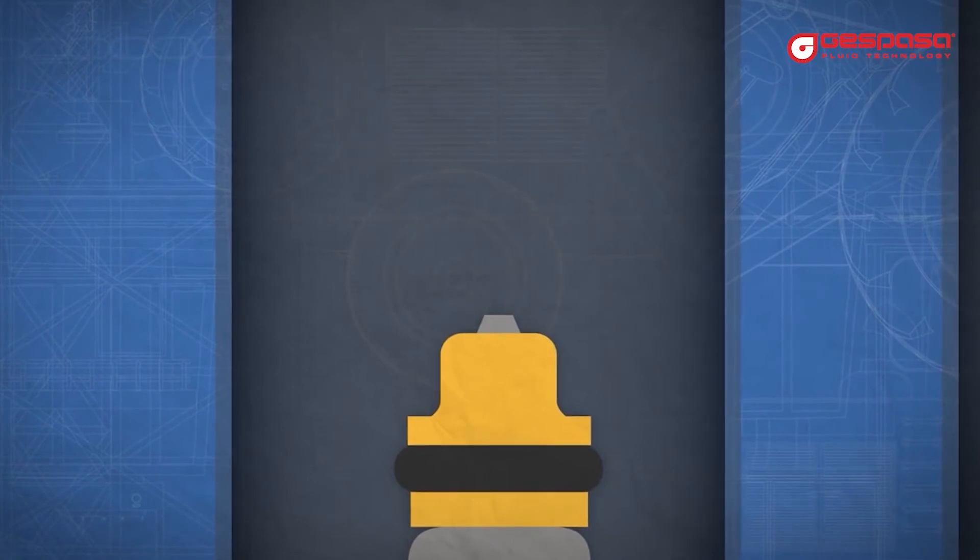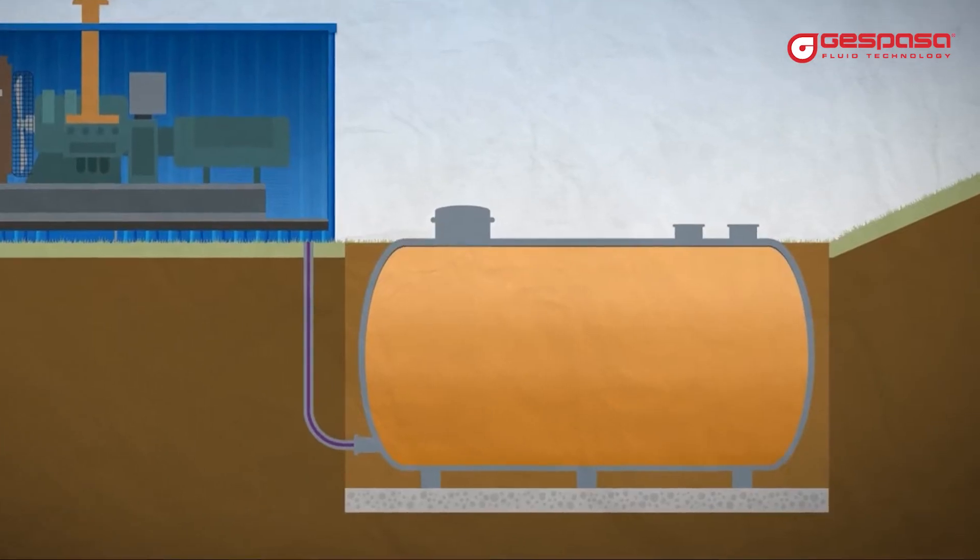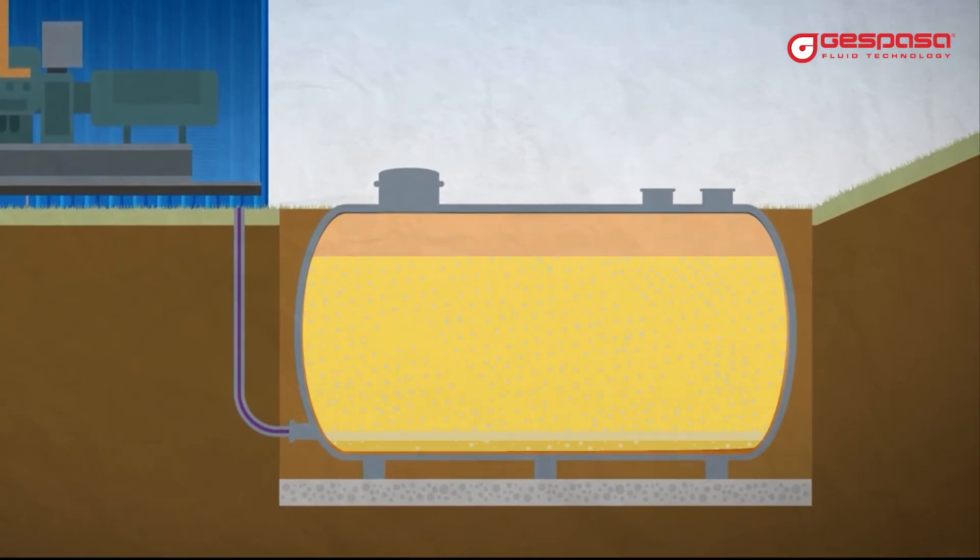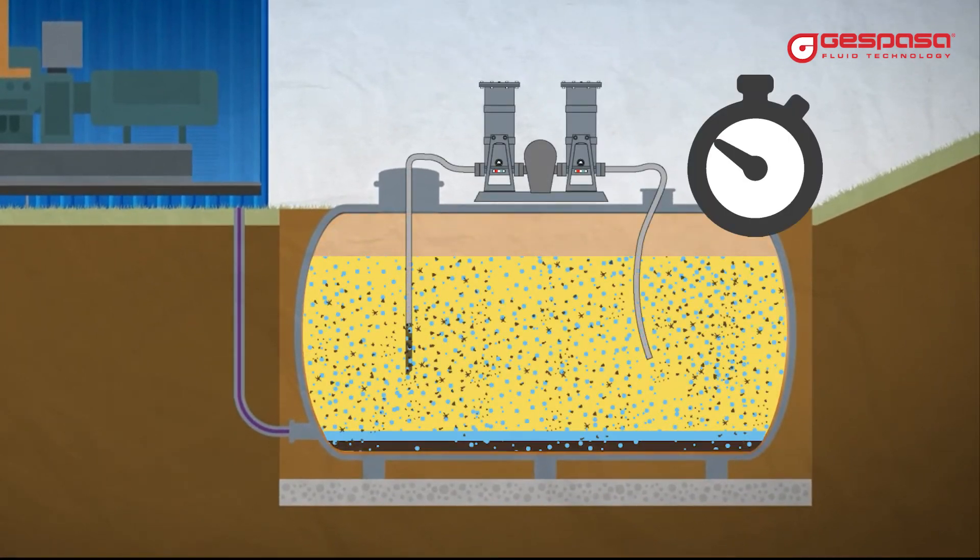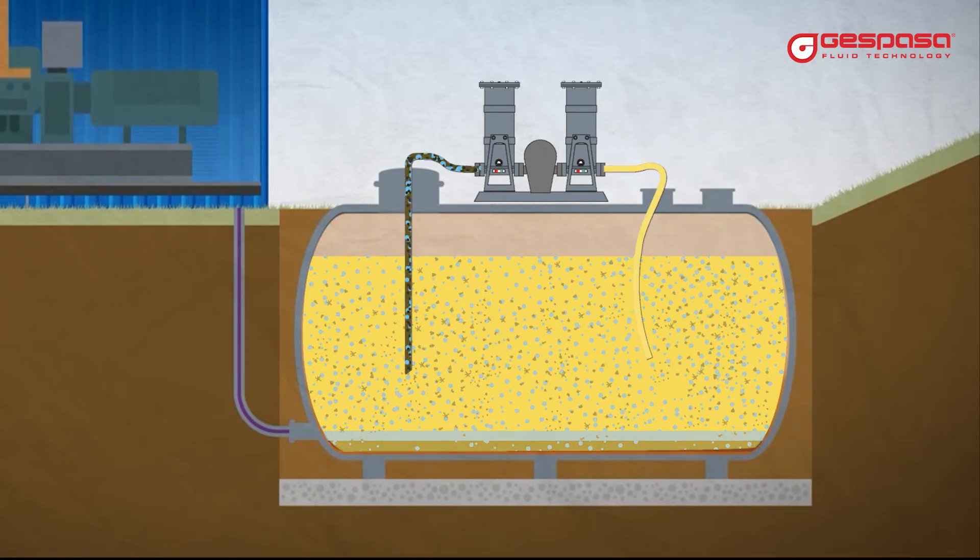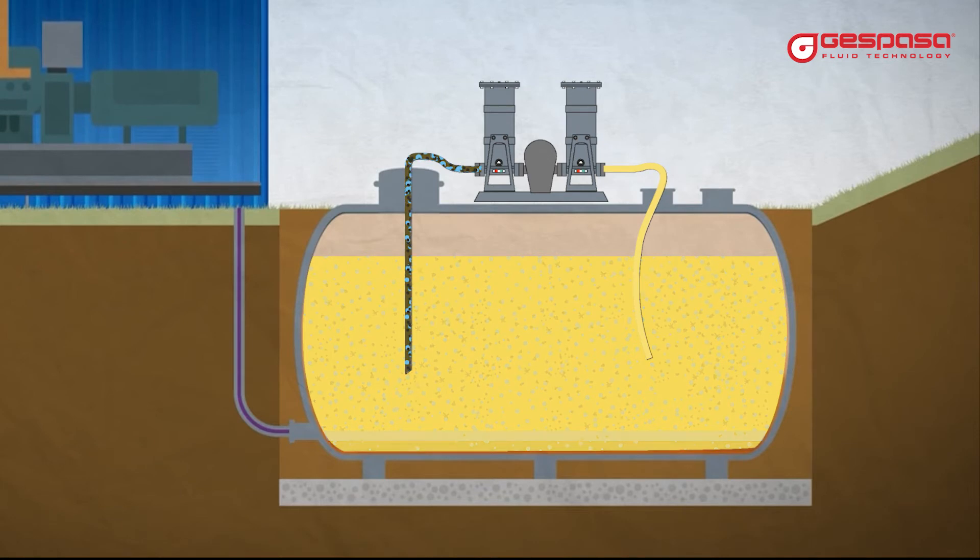Install a Hispasa treatment kit and program the filtration hours. The Hispasa filter elements will absorb the emulsified water and filter the micro impurities, preventing sludge and sediment from creating in your tanks.